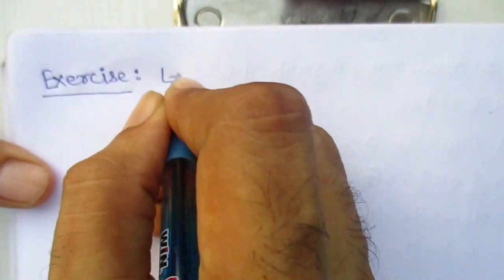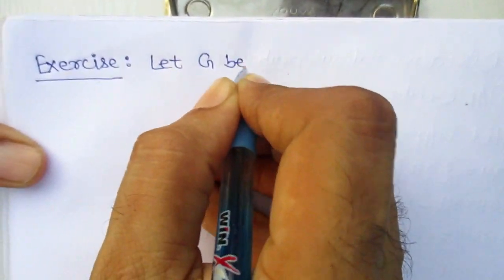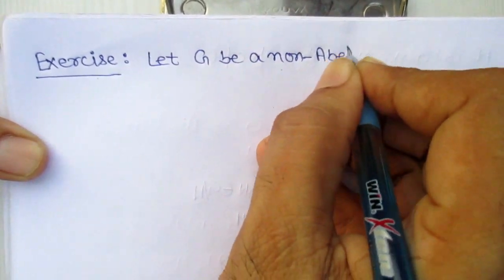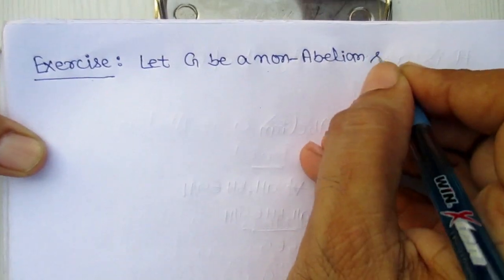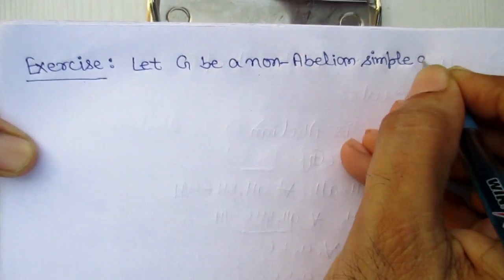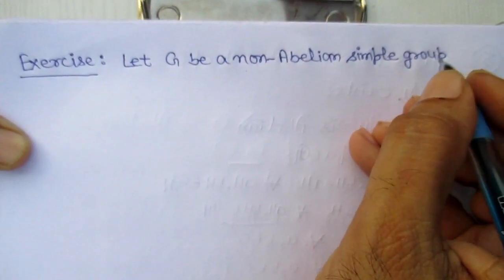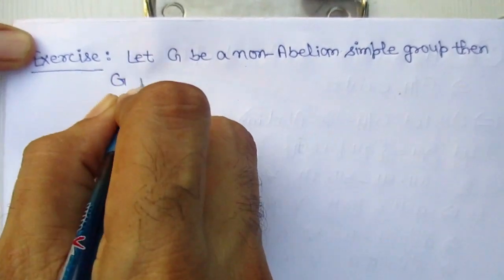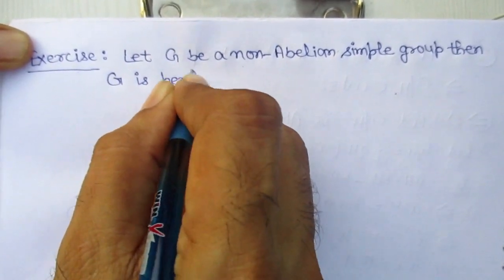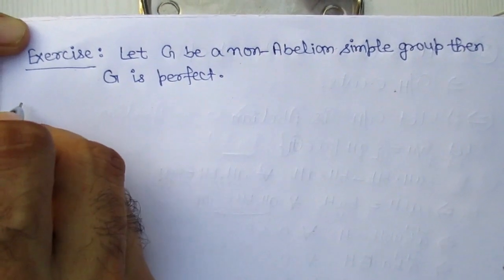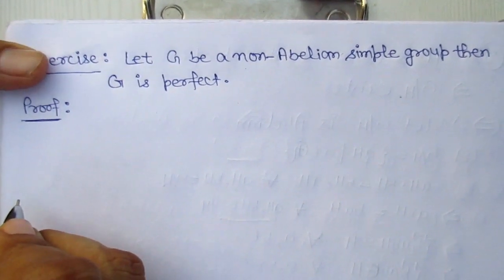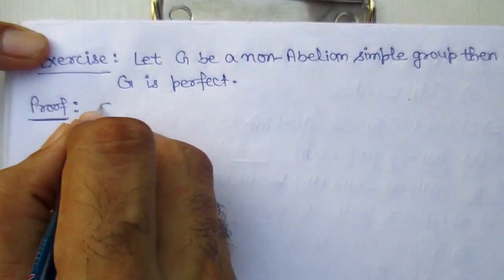Exercise: Let G be a non-abelian simple group. If G is a non-abelian simple group, then G is always perfect. We need to prove this.